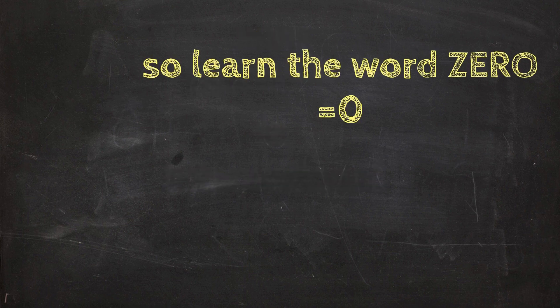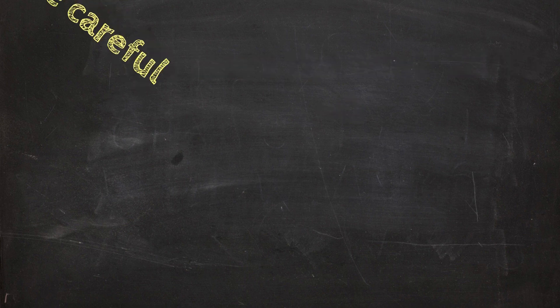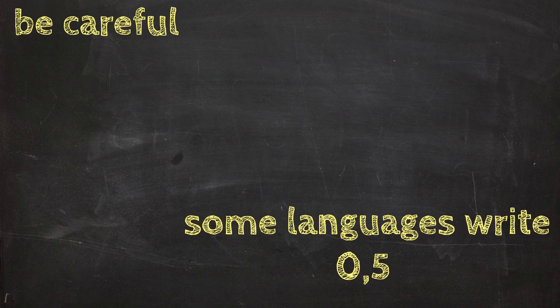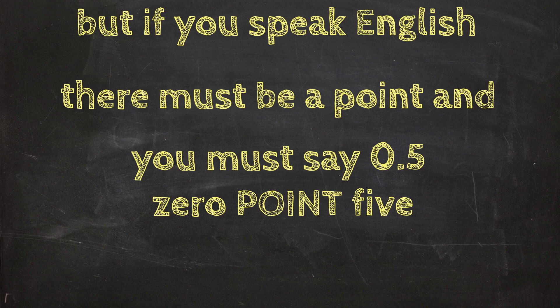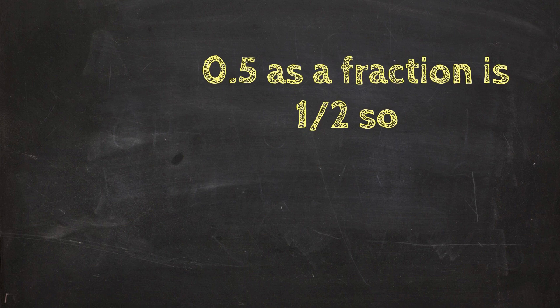Be careful, some languages write 0 or 0 comma 5, but in English we have a decimal point and you must say 0.5, 0.5, or 0.5. As a fraction, 0.5 is 1 half.